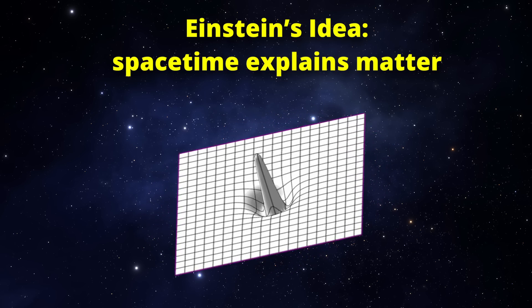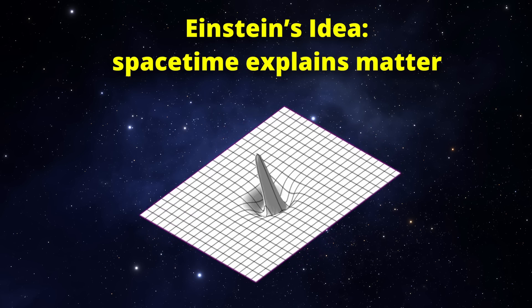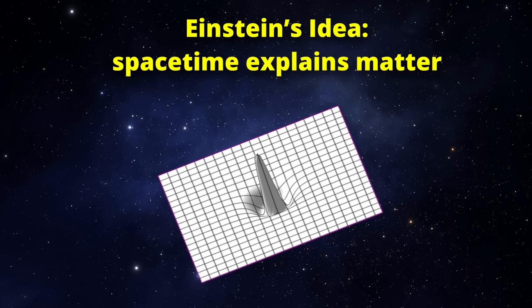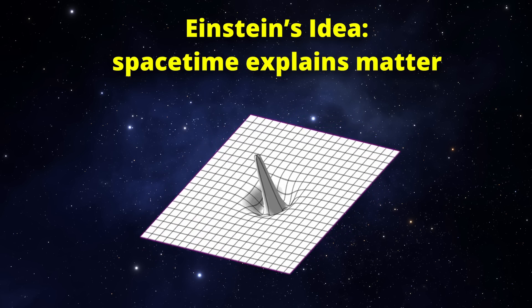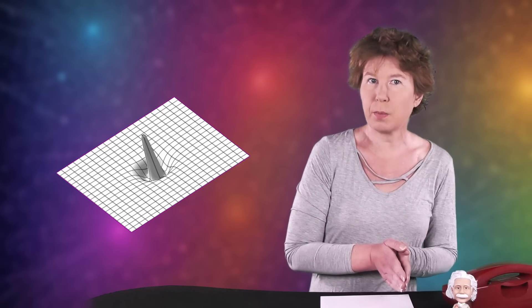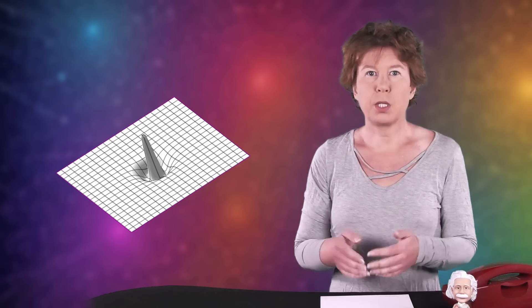He wanted to find equations that'd have solutions corresponding to the fundamental particles of nature. I must admit that this is partly speculation based on what Einstein wrote in his papers, but I'll explain in a moment why I think that's what he meant. Before I can do that, however, I have to tell you what the status of physics was at the time Einstein set out for his unified theory.